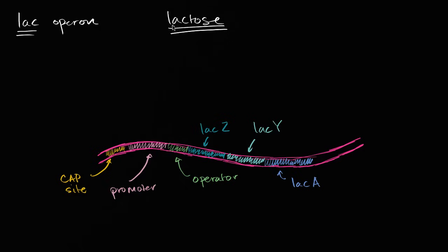The word lactose might already be familiar to you — it is a sugar found in milk. Some of us are lactose intolerant and have trouble digesting it. For a cell to make use of lactose, it needs to be able to absorb it and split it up into simpler sugars that it can actually use for fuel. That is what the genes in the lac operon code for.